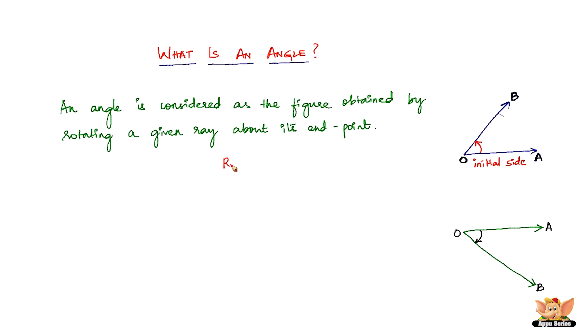Before I go to the next thing, let me mention the revolving side is called a generating line. OA is the initial side, and the final side, OB, is called the terminal side.